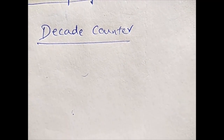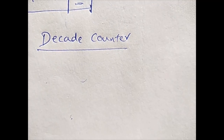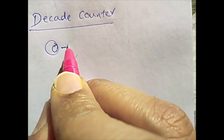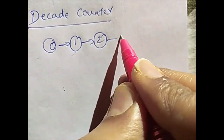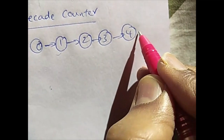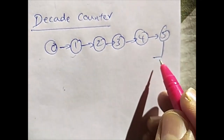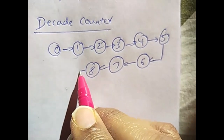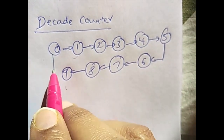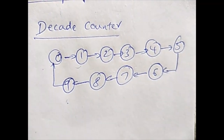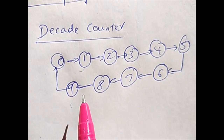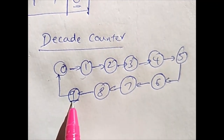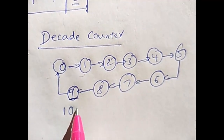A decade counter is a digital circuit that counts 10 digits, starting from 0 and going up to 9. After reaching 9, it resets back to 0. The maximum number is 9, so how many binary bits are required to represent 9? For 9, we require 4 bits: 1001.